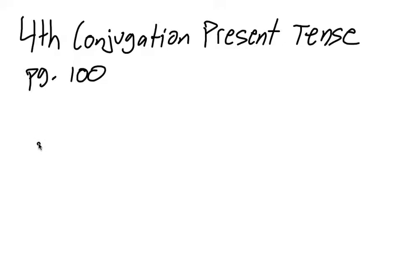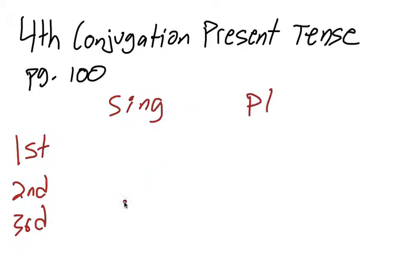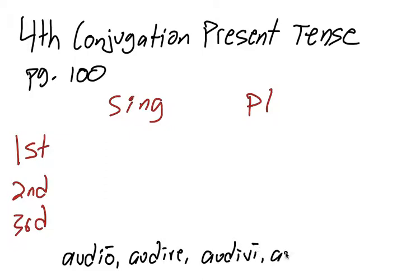I'm going to go ahead right into it and set up a chart for the conjugation with first, second, and third person and singular and plural. And our sample verb is going to be the verb audio and so the principal parts are audio, audire, audiwi, auditum and audio means to hear or to listen to.